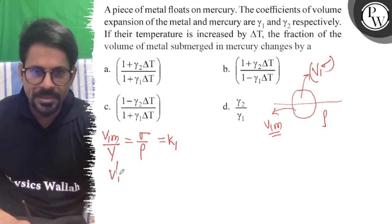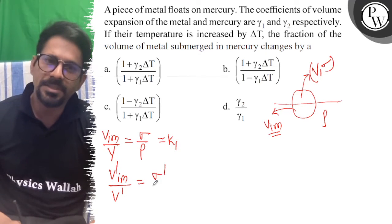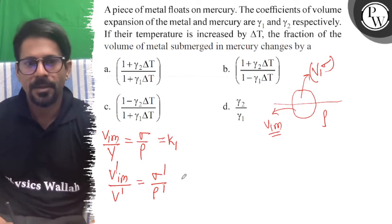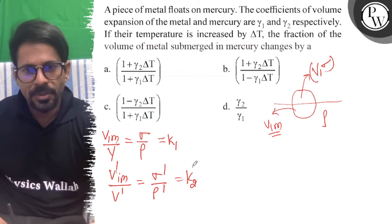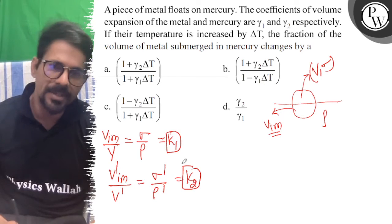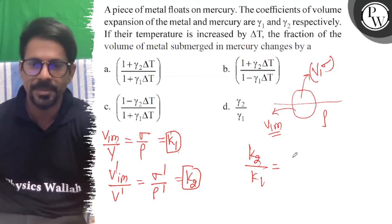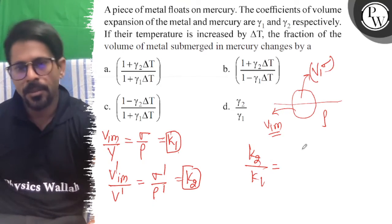If we increase the temperature, let's say the immersed volume changes and the volume of body also changes. Density changes. I will write this way. And let's say this is K2. So it becomes final. That was your initial. So fractional change is final with respect to initial, K2 upon K1. That is the fractional change of the immersed volume with respect to the initial value.